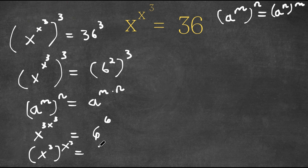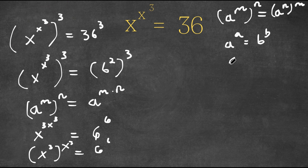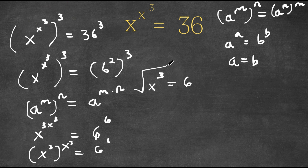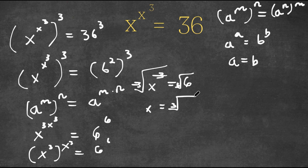This is equal to 6 to the power of 6. Now if we have something in the form a to the power of a is equal to b to the power of b, this means that a is equal to b. So in this case, x to the power of 3 is equal to 6. Taking the cube root on both sides, these two cancel out, leaving us with x is equal to the cube root of 6.